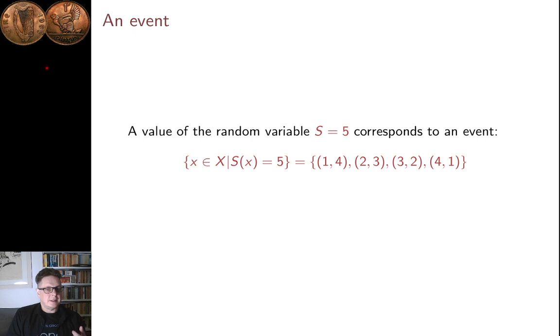Now, an event can be defined from the random variable by looking at all the outcomes that take the same value. This is really the power or part of the power of random variables. It could be regarded as just a piece of notational sugar, just a nice way of making the notation work, but we should never underestimate the power of a good notation. So S = 5 is often taken to stand for the set of possible outcomes that make S equal to 5.